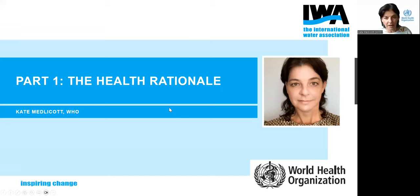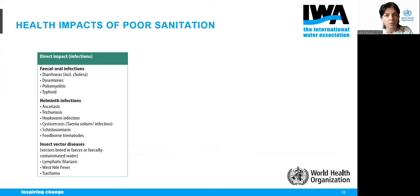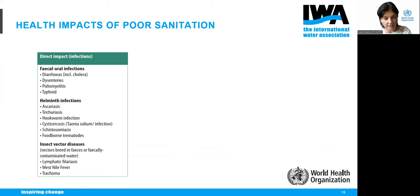We are WHO, so I'll start on the health rationale, answering why we need safely managed sanitation — why the goalposts have shifted from ending open defecation. We can think about health impacts of poor sanitation in three categories: infectious disease — particularly diarrhea and cholera, which is raging at the moment; helminth infections, those are intestinal worms; and also insect and vector-borne diseases that breed in feces and wastewater.